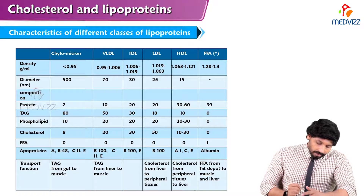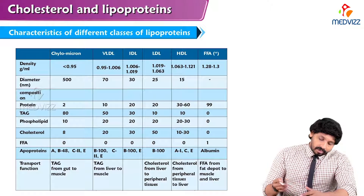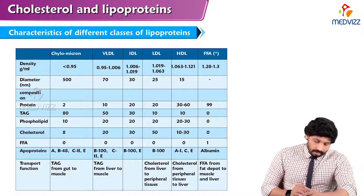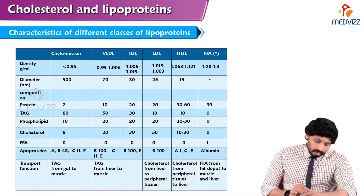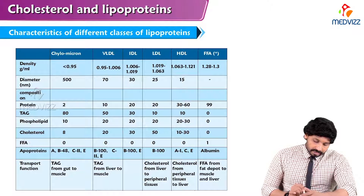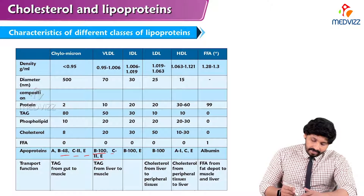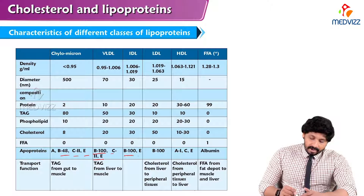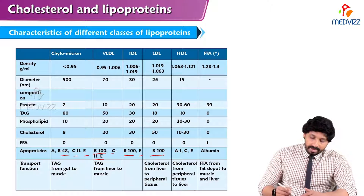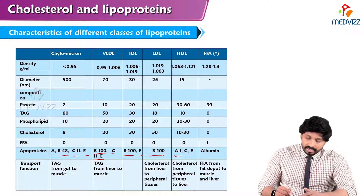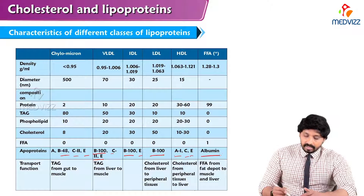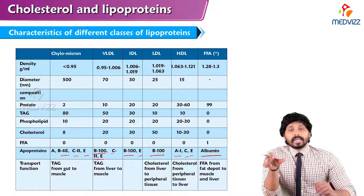In this table, the density, diameter, and composition of chylomicrons, VLDL, IDL, LDL, and HDL are given — including protein percentage, phospholipid percentage, cholesterol, free fatty acids, and apoproteins. Chylomicrons carry apoproteins A, B48, C2, and E. VLDL has ApoB100, ApoC2, and E. IDL has B100 and E. LDL has ApoB100. HDL has ApoA1 and C. For free fatty acids, albumin is the carrier.